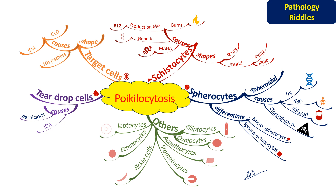Last of these is leptocytes — unusually thin RBCs that appear as very lightly stained target cells with very little or no hemoglobin in the central area. They are seen in iron deficiency anemia, thalassemia, or liver disease. This mind map helps you remember the poikilocytes and their causes, since as you go through a peripheral smear you should recall these causes to determine the etiology of disease and guide the physician.